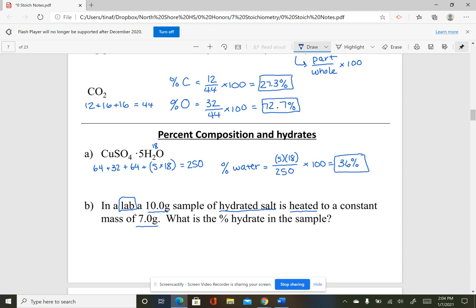They want to know what is the percent water in the hydrate. Right now the water is evaporated, it's in the air. How are we going to figure this out? This is my bottom number - 10 grams was my original salt with the water in it. How do I know how much water was in it if it's in the air?